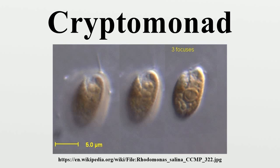One suggested grouping includes the following genera: Cryptomonas, Chroomonas, Komma, Hemiselmis, Rhodomonas, Rhinomonas, Storiatula, Guillardia, Hanusia, Geminigera, Plagioselmis, Teleaulax, Proteomonas sulcata, Falcomonas dorcteoides, and Kathablepharidae. The Kathablepharidae, a group of heterotrophic flagellates, have been considered as part of the Cryptophyta since Kathablepharidae were described in 1939.